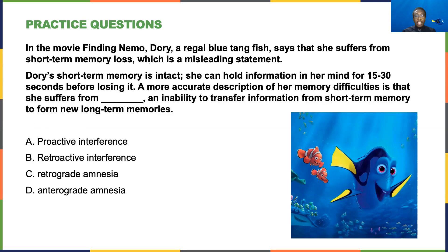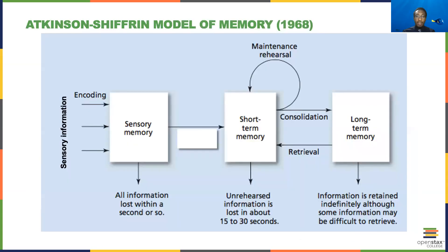In the movie Finding Nemo, Dory — a regal blue tang fish — says she suffers from short-term memory loss, which is actually a misleading statement. Dory's short-term memory is intact; she can hold information in her mind for 15 to 30 seconds before losing it. A more accurate description is that she suffers from anterograde amnesia — an inability to transfer information from short-term memory to form new long-term memories. Referring to the diagram, Dory's short-term memories are intact and she can rehearse information, but it never gets consolidated into long-term memory, which is classically seen in anterograde amnesia. The answer is D.